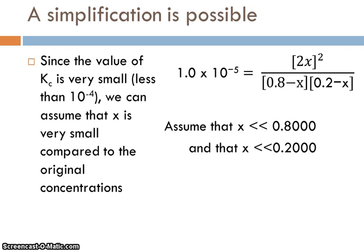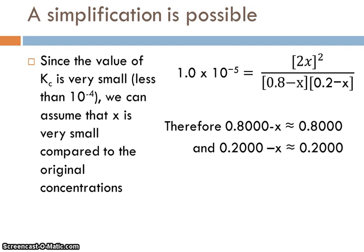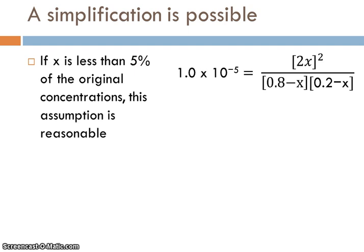And so we can assume that x is much, much smaller than 0.8, and that x is much, much smaller than 0.2. So much smaller that we're going to ignore it. And therefore, 0.8 minus x is approximately 0.8, and 0.2 minus x is approximately 0.2. Now again, we can only do this when the Keq is less than 10 to the minus fourth. But our Keq is 1 times 10 to the minus fifth, so it definitely fits into this category. What we're basically assuming is that x is less than 5% of the initial concentrations. At the end, after we calculate x, we'll have to go check and make sure it really does fall into this less than 5% guideline.